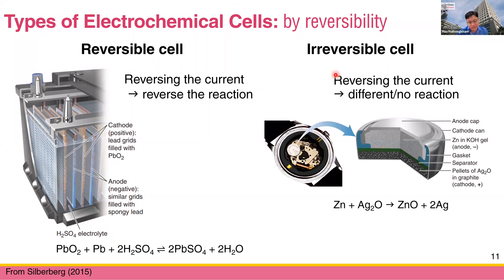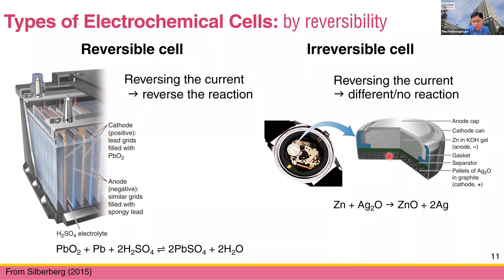Another type is the irreversible cell, where you either cannot reverse the reaction, or if you do reverse it, you get something different — not the exact opposite. A classic example is the button battery in a calculator or watch: you cannot recharge it. So this is an irreversible cell. That is the second way to categorize electrochemical cells.